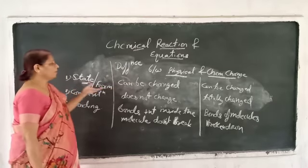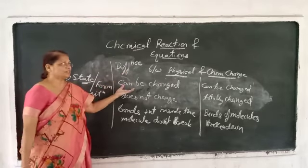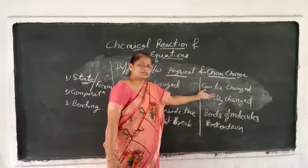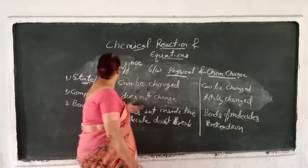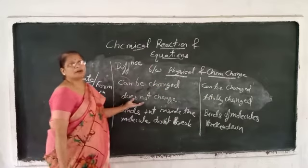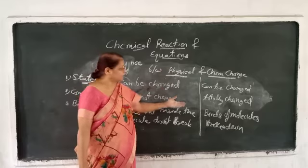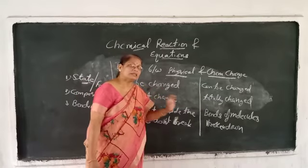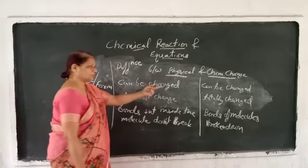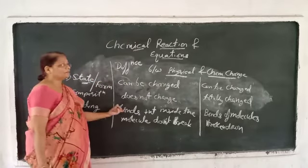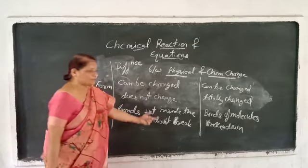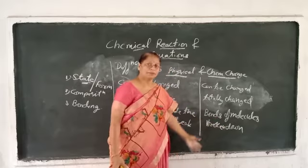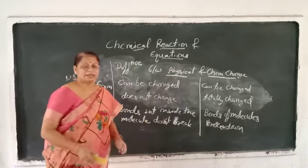So to summarize: in physical change, state can be changed; in chemical change, state can also be changed. Composition does not change during physical change, but in chemical change composition is totally changed. Bonds present inside the molecule do not break in physical change, whereas bonds of molecules break down in chemical change.